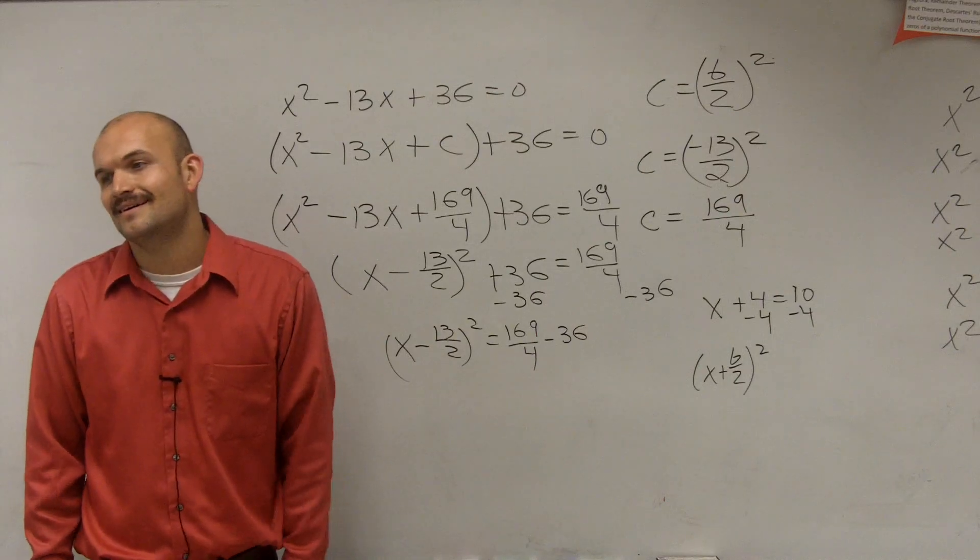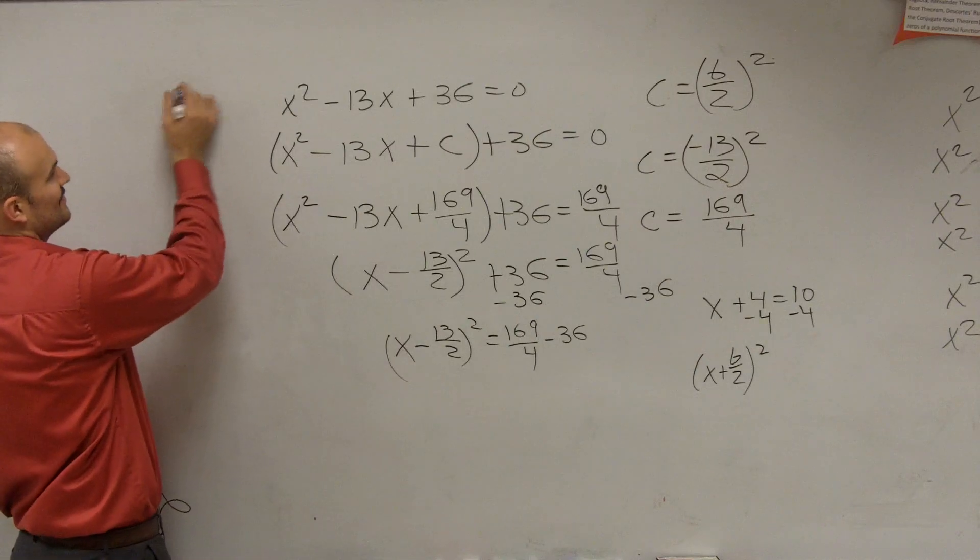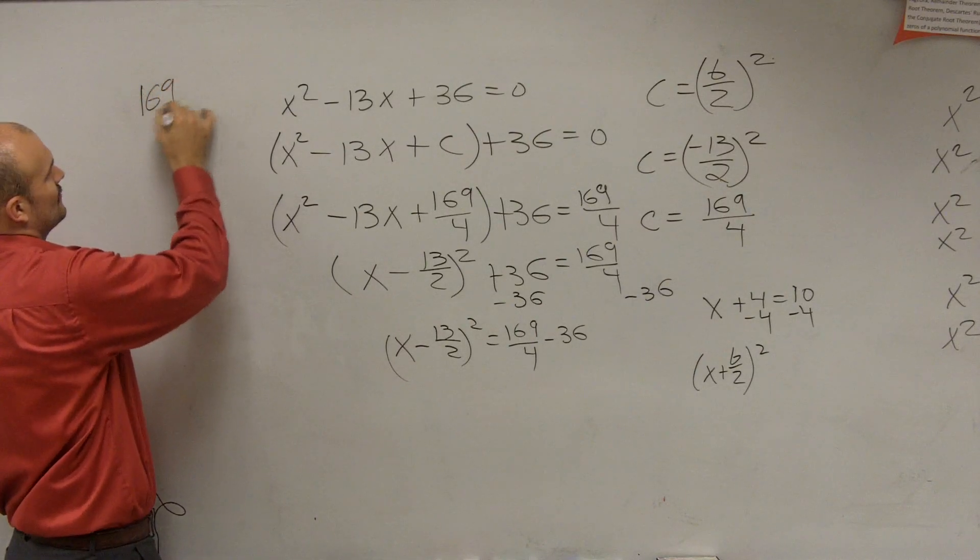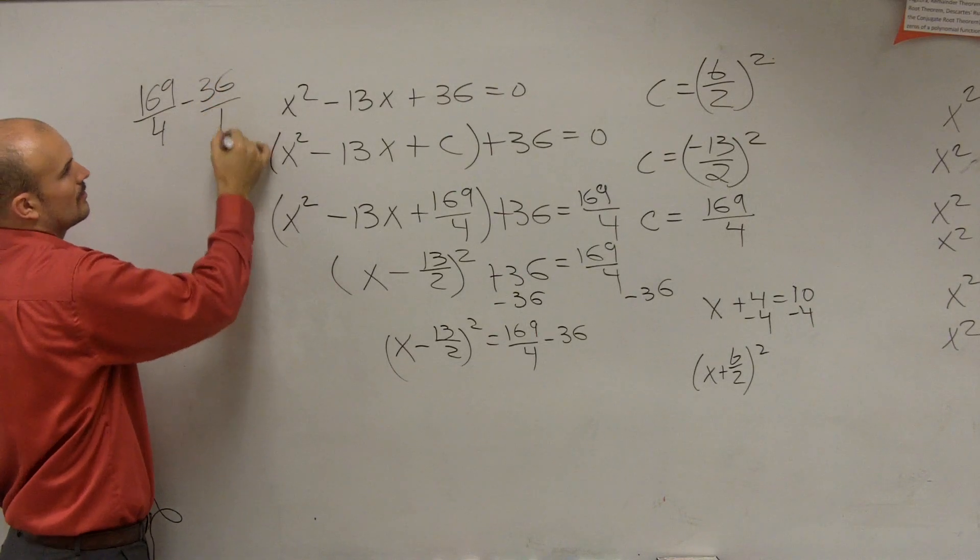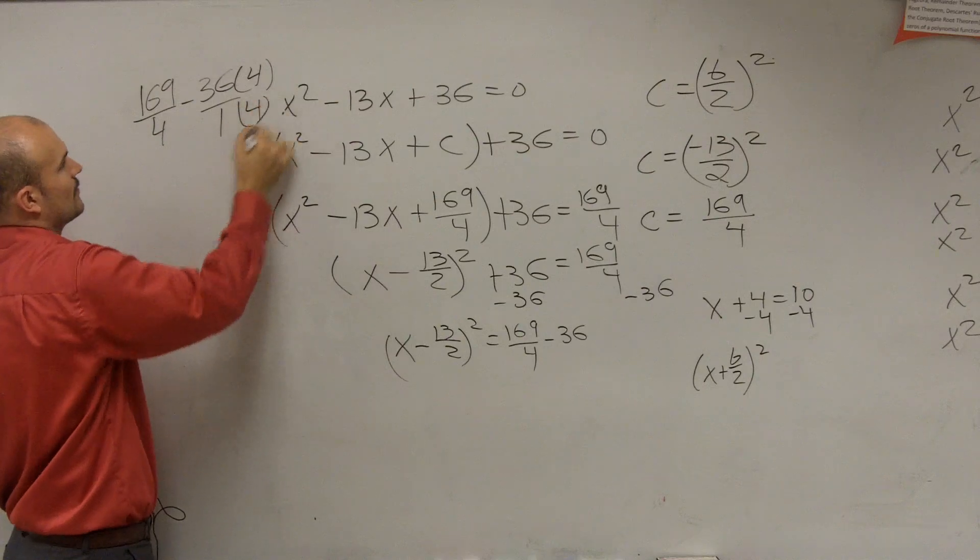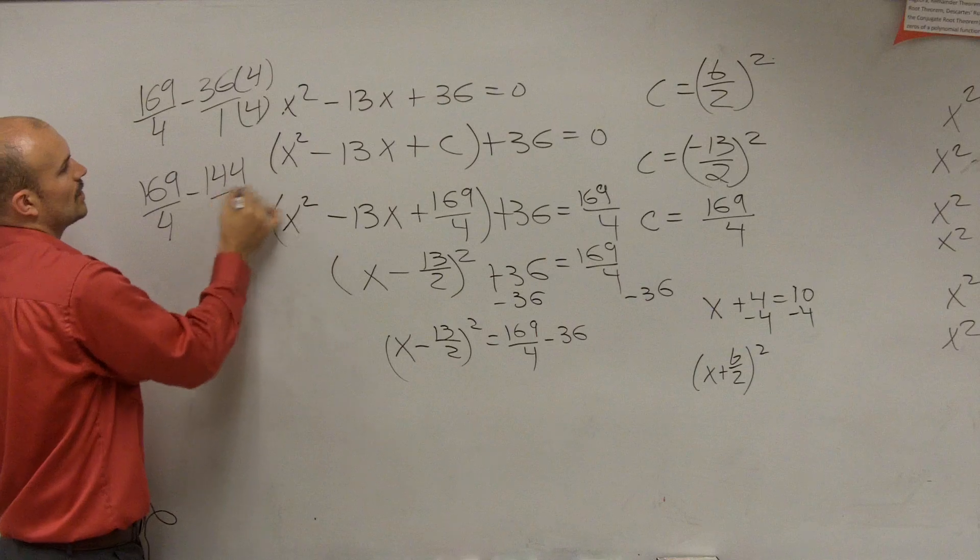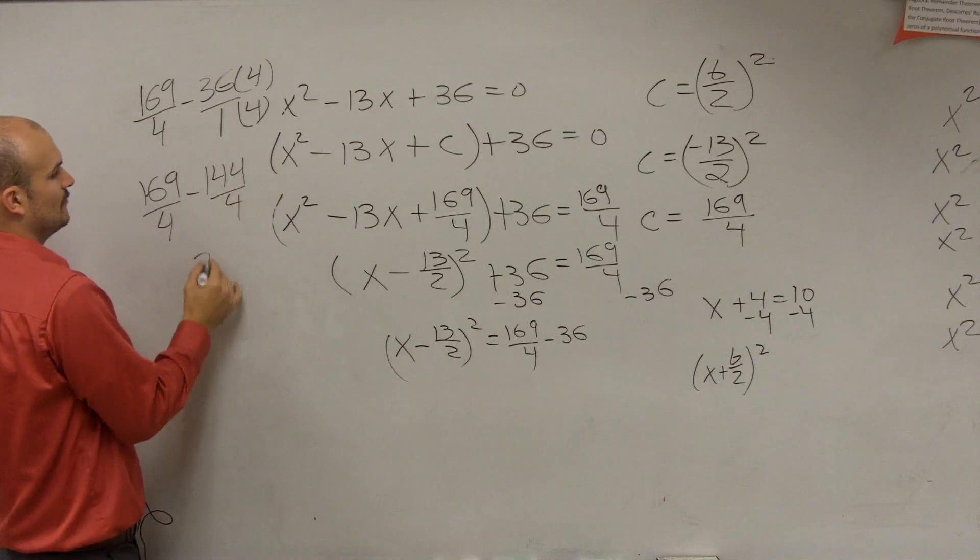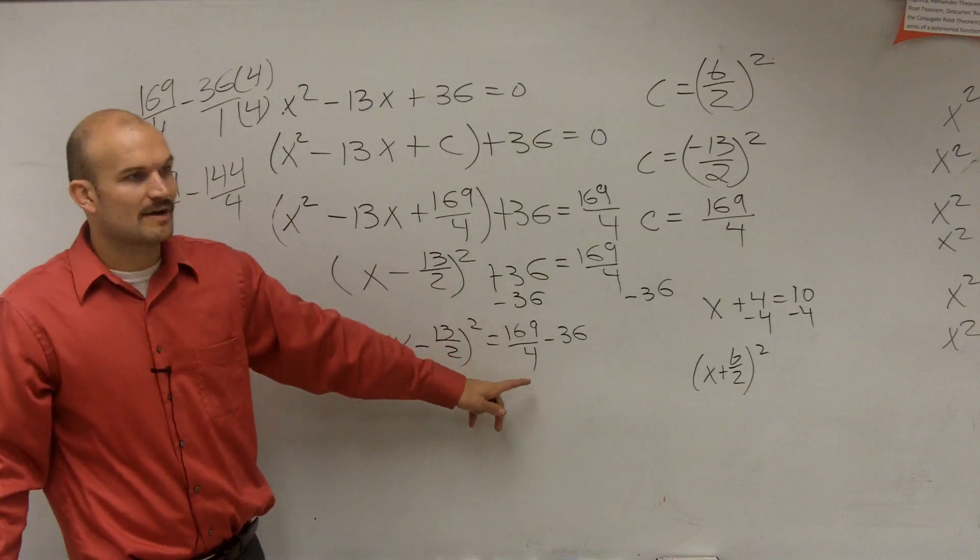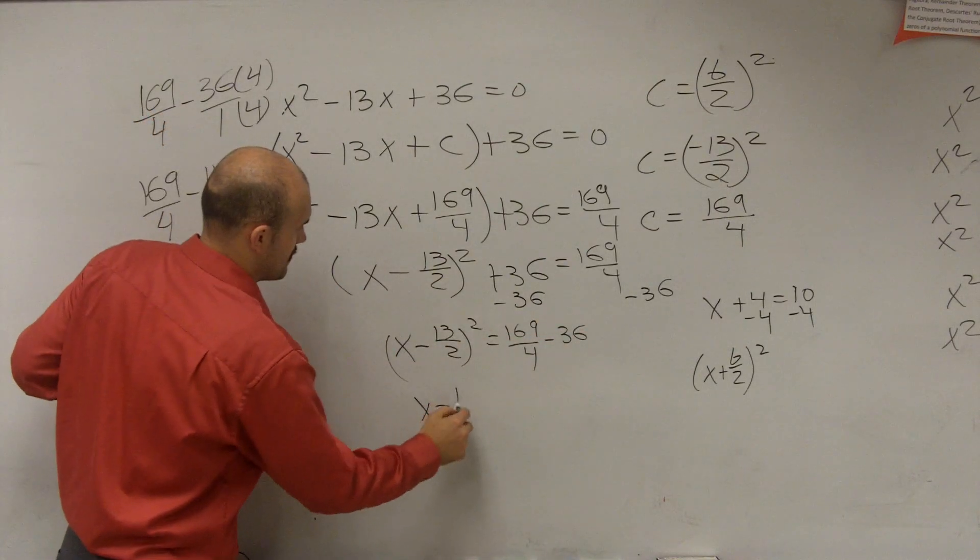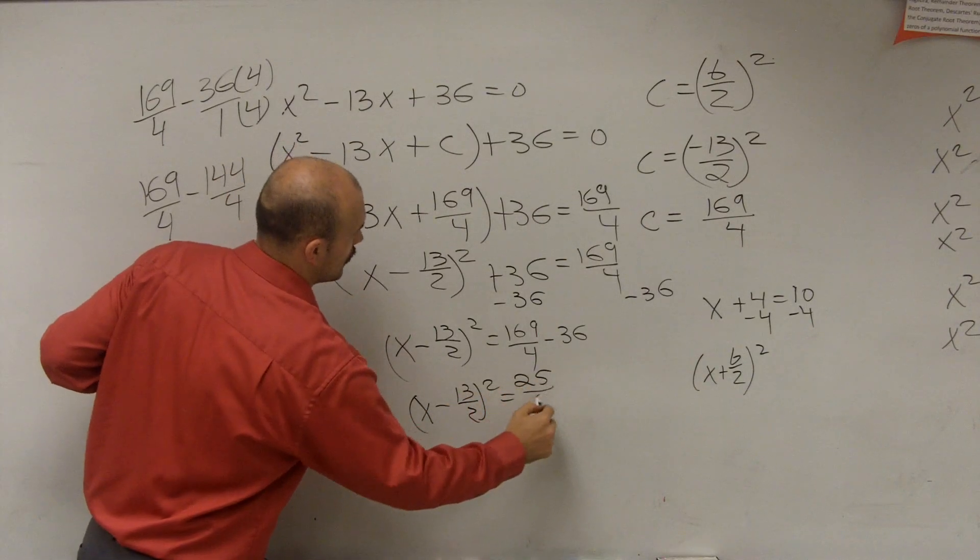And you might say, oh, subtracting fractions. So how do you do that? Well, you've got to get them to be the same denominator. So you multiply by 4 over 4. So you get 169 over 4 minus 144 over 4. Therefore, you get 25 over 4. So really, 169 divided by 4 minus 36 equals 25 over 4.